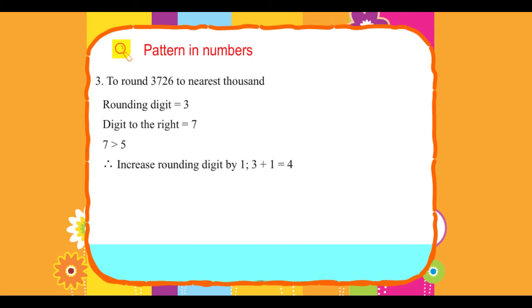Therefore, increase the rounding digit by 1: 3 + 1 = 4. Change all other digits to the right to 0. Therefore, 3726 rounded to the nearest thousand is 4000.